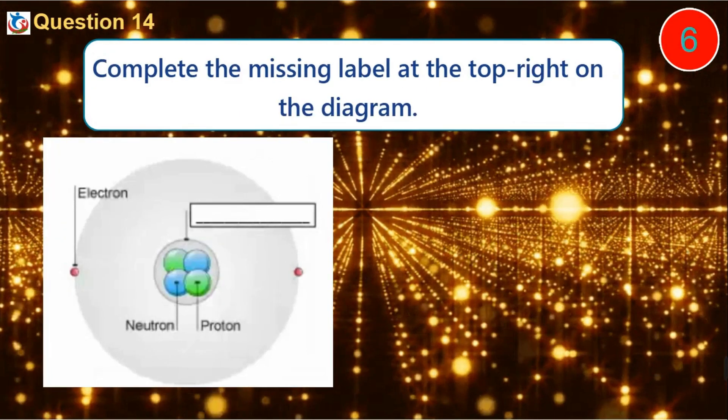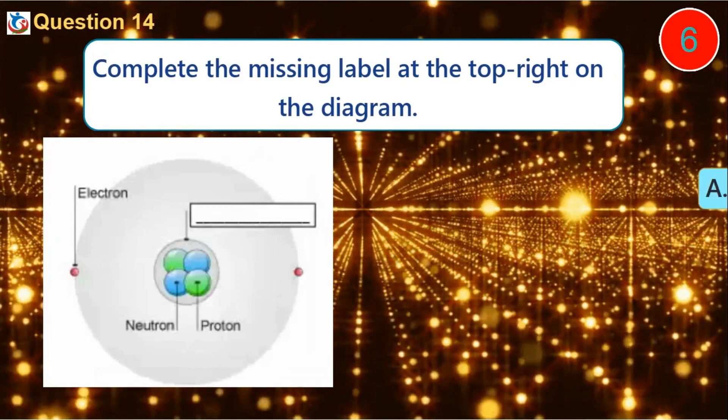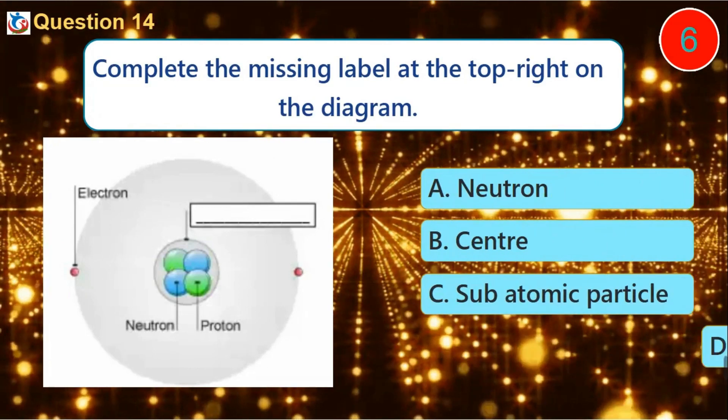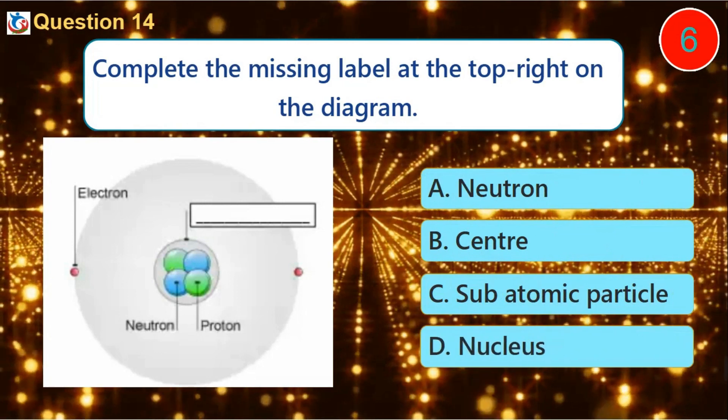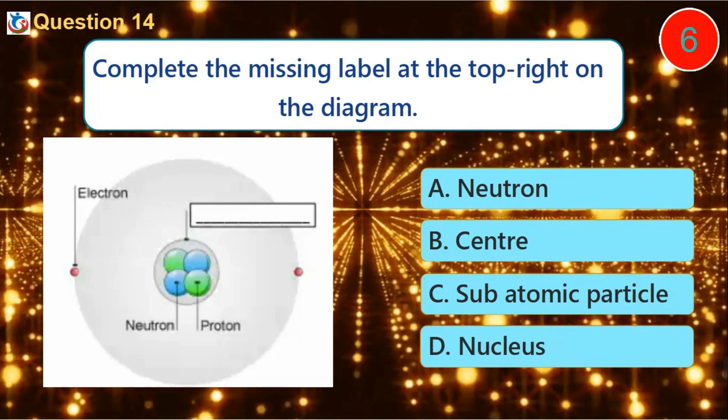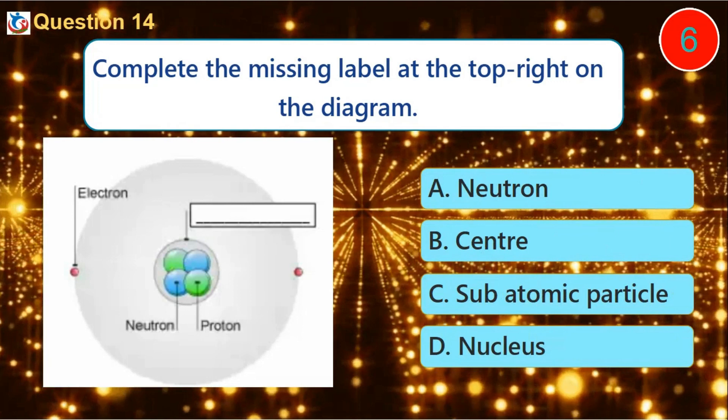Question 14. Complete the missing label at the top right on the diagram. A. Neutron B. Center C. Subatomic particle D. Nucleus